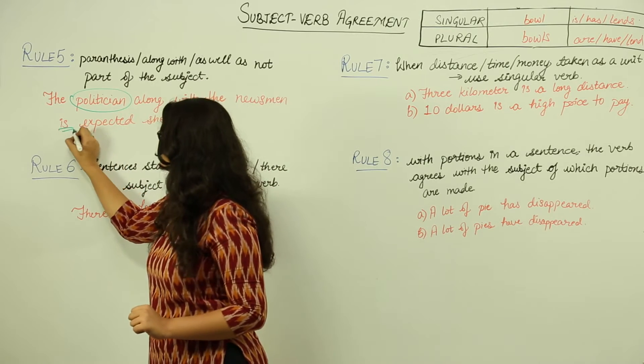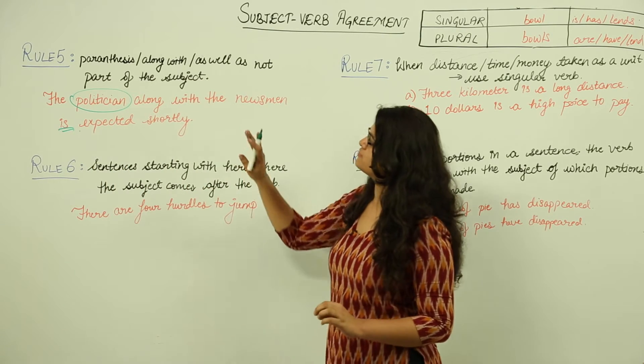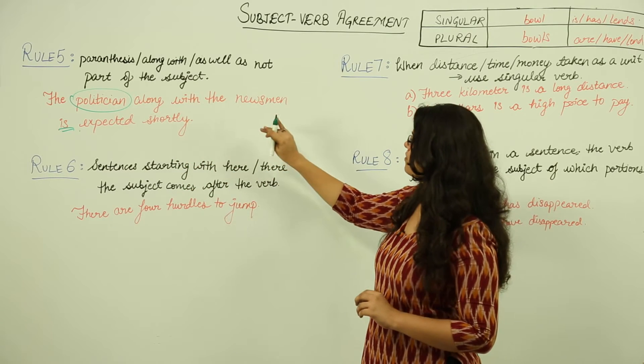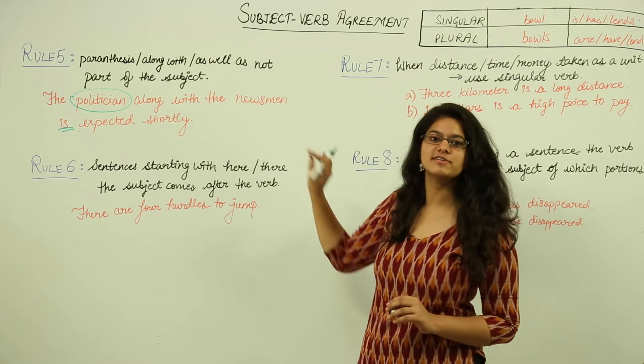we use a singular verb that is 'is'. So the subject becomes politician and the verb becomes 'is'; along with the newsman is not included in the subject.